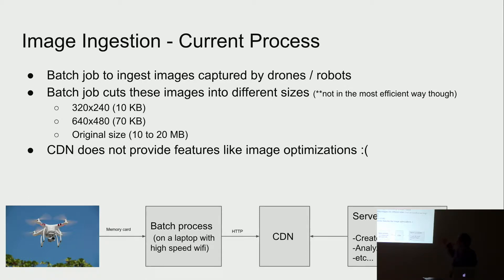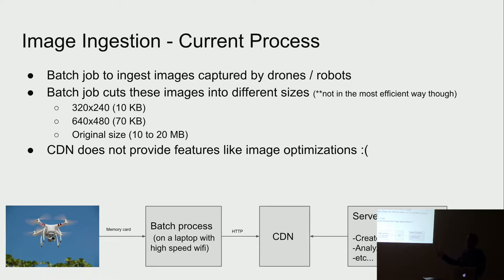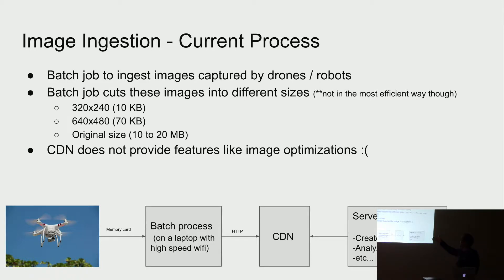We use a CDN currently, but the CDN doesn't provide image optimizations. A lot of CDNs out there provide image optimizations, but the one we use does not. So we have to cut our own images — we take the huge image and change the resolution to things like 320x240 or 640, and we keep the original one as well. That's the current process.